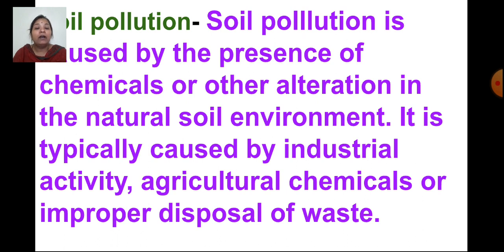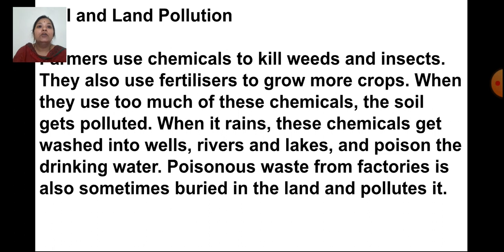Waste and chemicals decrease the fertility of soil. When chemicals from factories mix with the soil, it becomes infertile. Farmers use chemicals to kill weeds and insects, and fertilizers to grow more crops and improve yield. But when too many fertilizers or chemicals are used, the soil gets polluted, and when it rains these chemicals mix with rainwater and flow into groundwater.